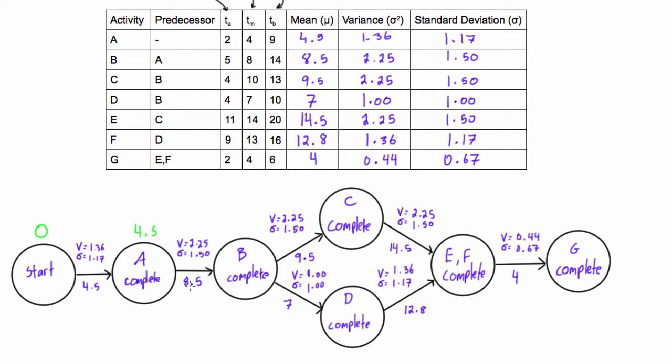Now we have 4.5 plus 8.5, we will get 13. And I'm just doing this in green just so you'll be able to see which ones are the early times and the late times versus everything else so we don't get confused. All right, so we have 13 plus 9.5, that will give us 22.5. 13 plus 7, that will give us 20.